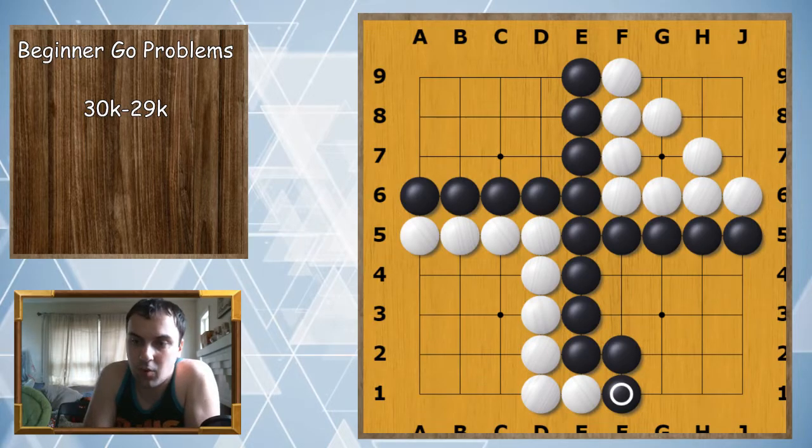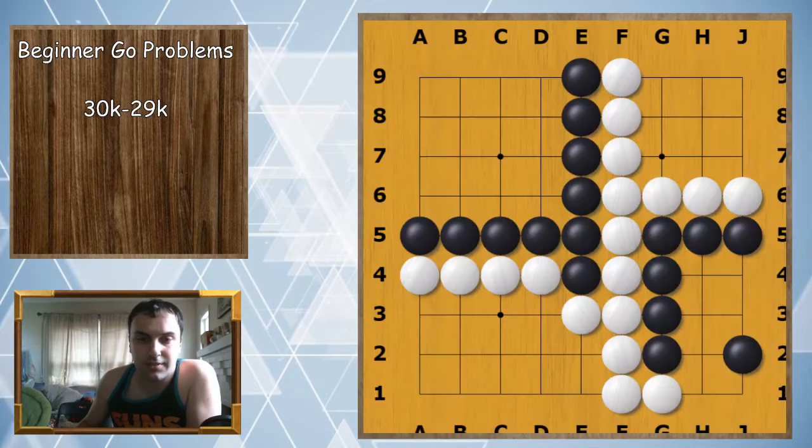Here we see that Black has blocked White from walking into the territory. These are the shapes you need to know to finish the game: these first line things.